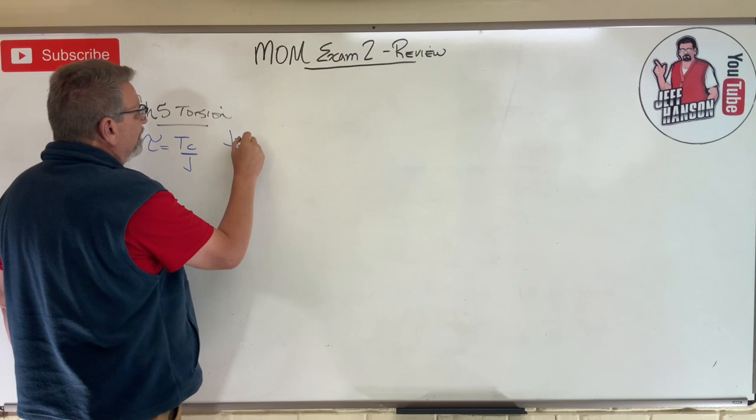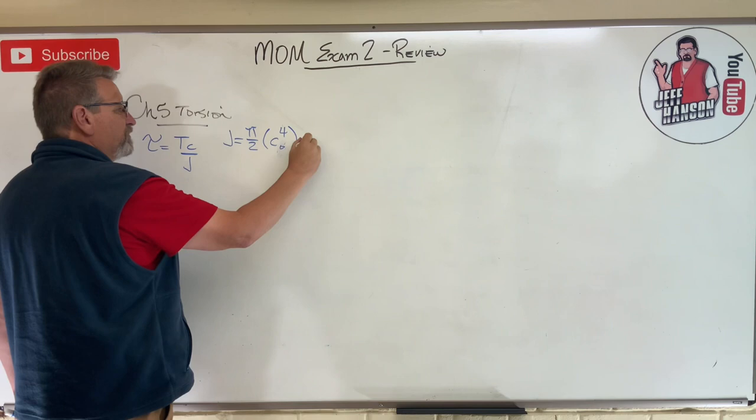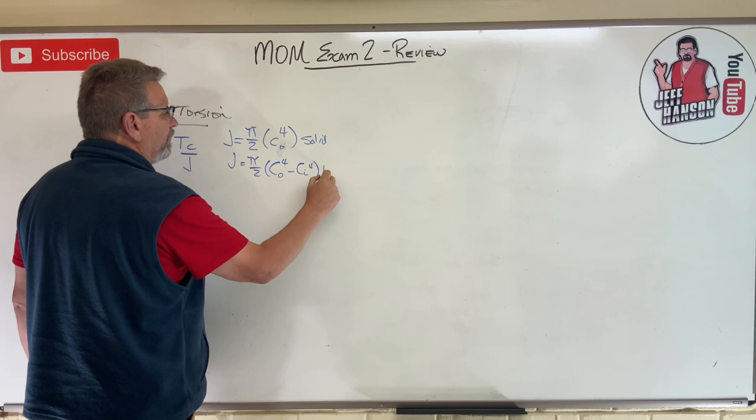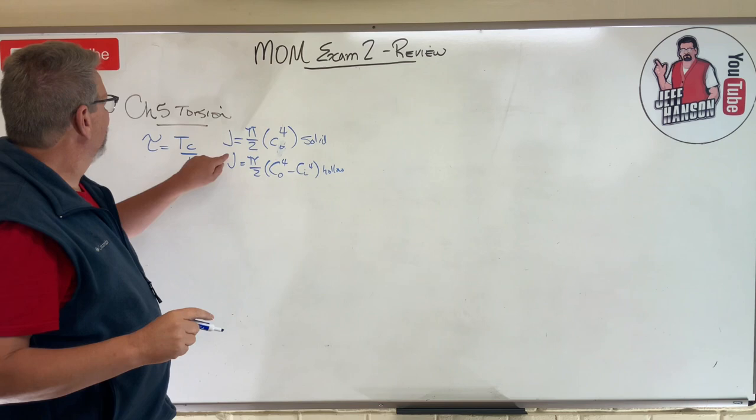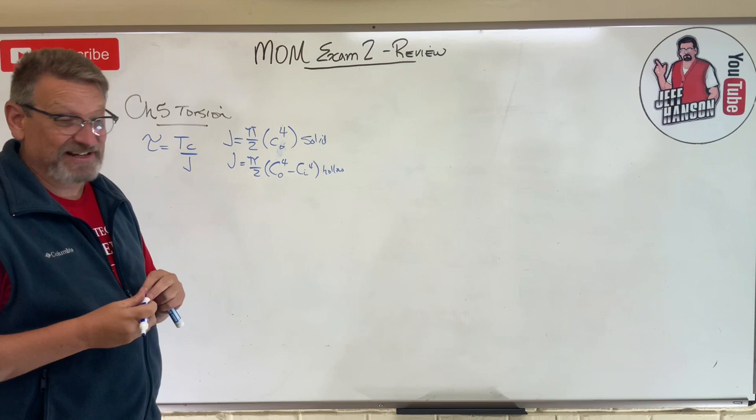We have to remember that J is pi over two C to the fourth. That's for solid. J equals pi over two C outer to the fourth minus C inner to the fourth for hollow round shafts. Big mistake here is thinking it's pi over four, but that's I for round shafts, not J. So don't get those two backwards because that's an easy thing to do.